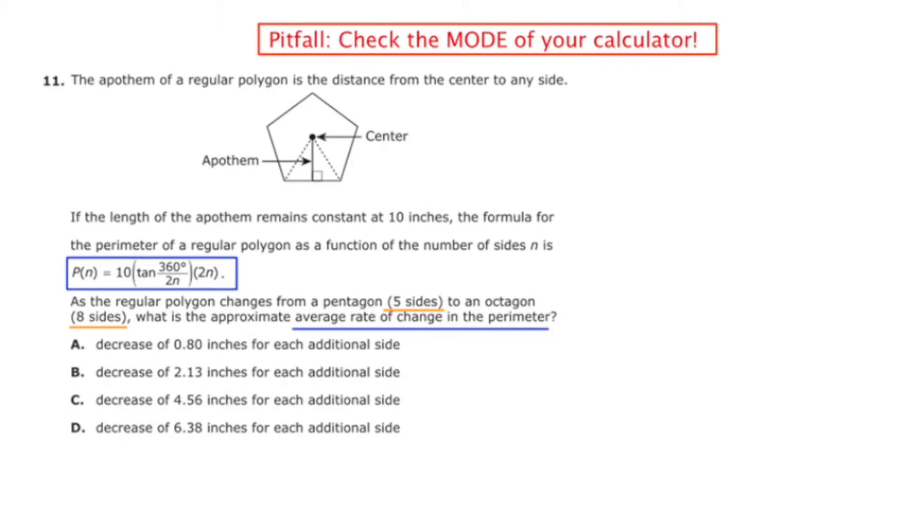You may have learned this in your geometry course. If the length of the apothem remains constant at 10 inches, the formula for the perimeter of a regular polygon as a function of the number of sides n is P(n) equals 10 times the tangent of 360 divided by 2n times 2n.